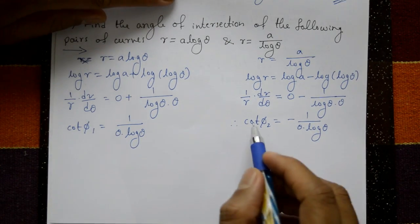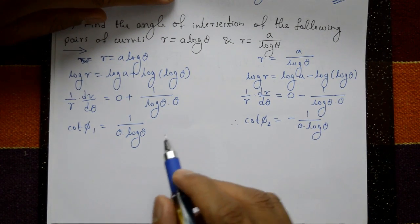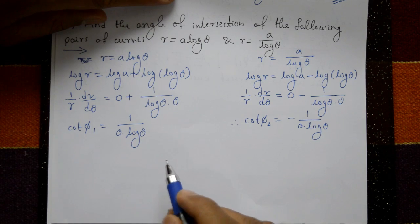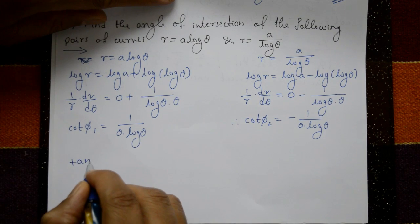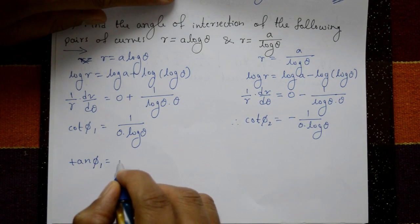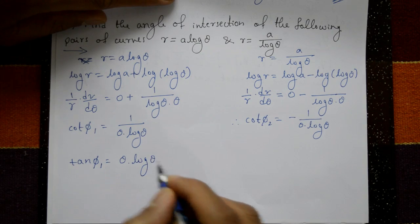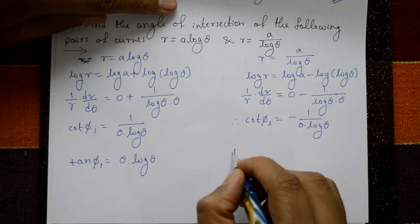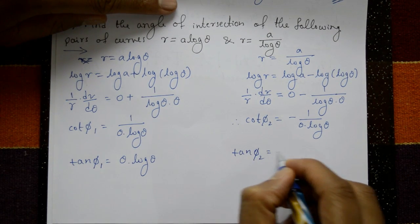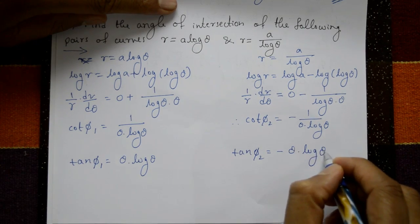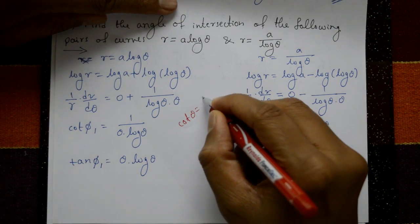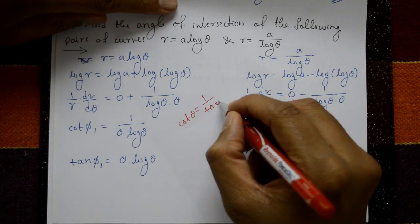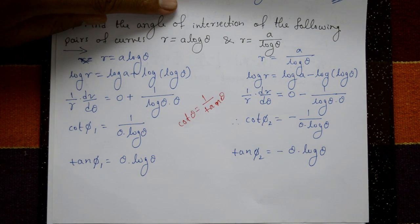Since we cannot directly find φ₁ and φ₂, we use tanφ instead. Since cotφ = 1/tanφ, we get tanφ₁ = θ·logθ and tanφ₂ = −θ·logθ.